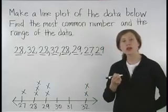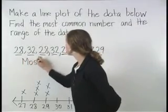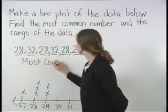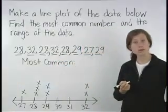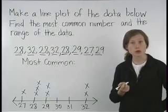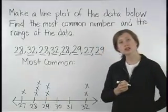Now, we want to know the most common number in our data set. The most common number will be the number with the most x's above it, which is 28. So, the most common number is 28.